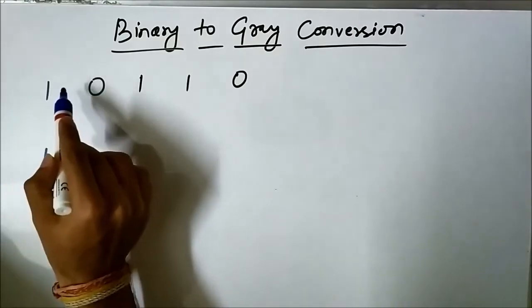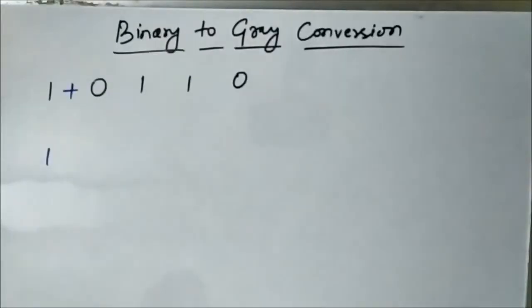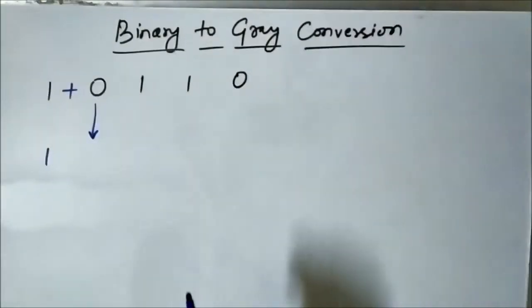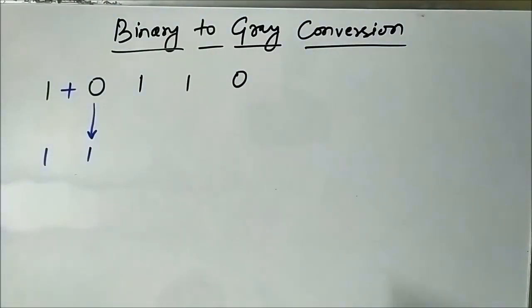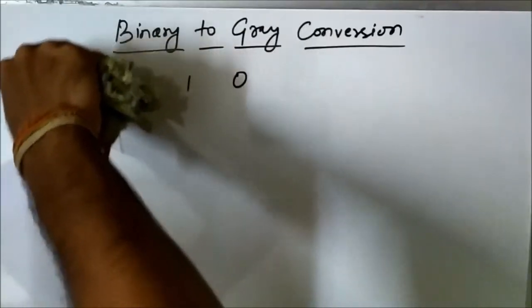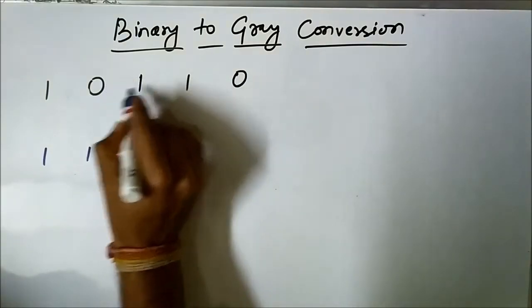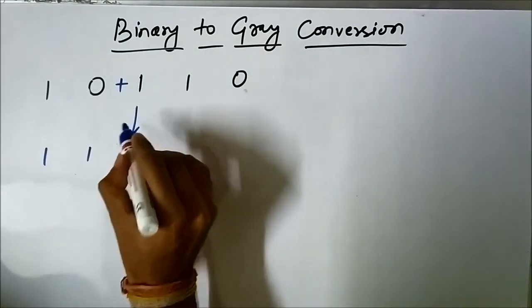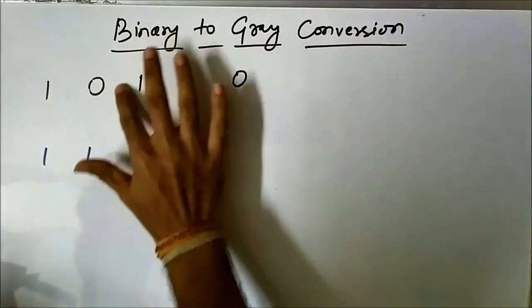Next, you perform the addition of the MSB bit with its next least significant bit — that is 1 plus 0 — and you write the result here. 1 plus 0 is 1. Next, forget about that addition, then you add this 0 bit with its next least significant bit: 0 plus 1, and you write the result here. 0 plus 1 is 1.